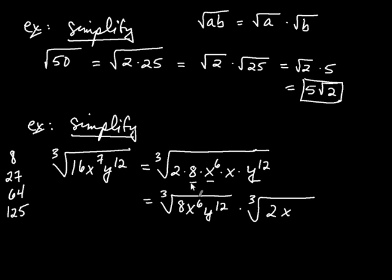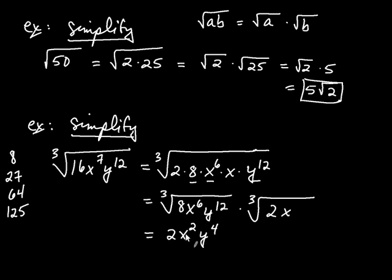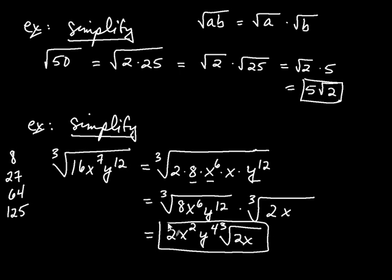The cube root of 8 is 2. The cube root of x to the 6th is x squared. The cube root of y to the 12th is y to the 4th. So because these are all perfect cubes, I'm mentally splitting them up: cube root of 8 is 2, cube root of x to the 6th is x squared, cube root of y to the 12th is y to the 4th. And then you still have the cube root of 2x. So the answer is 2x squared y to the 4th multiplied by the cube root of 2x.